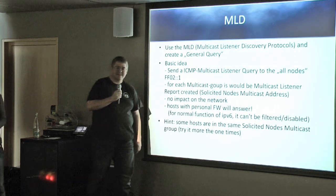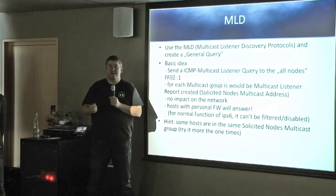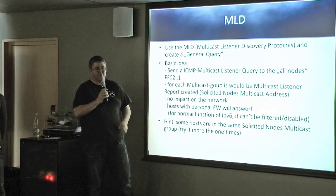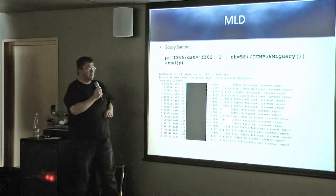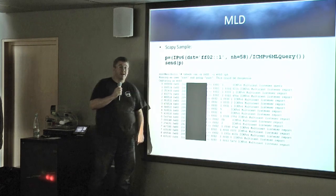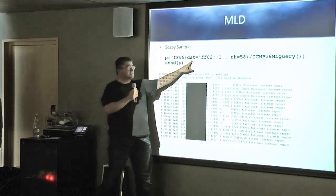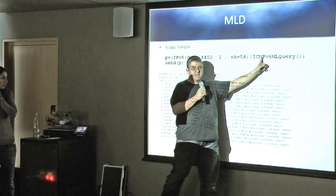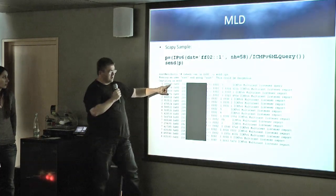There is also Multicast Listener Discovery (MLD). You can send out one packet and all clients must respond indicating which multicast addresses they are listening on. This is very informative. We do this with Scapy — a very useful tool for creating IPv6 packets. We craft an IPv6 packet with the destination address representing all link-local addresses, include the correct next header type, and send a query. We receive all the information back.